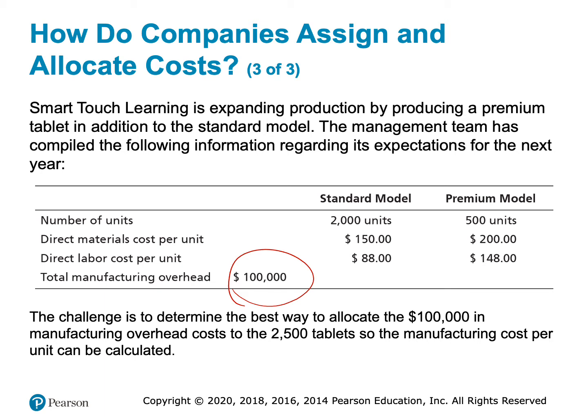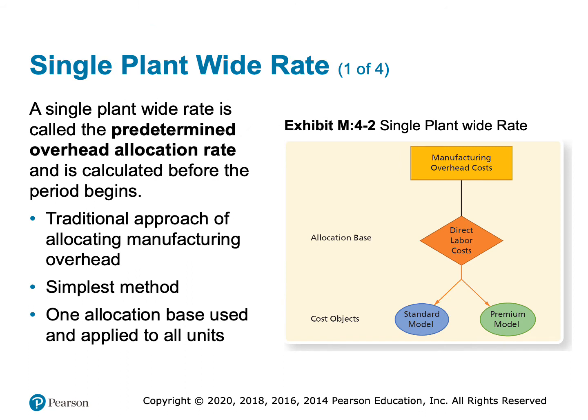What we've done in chapters 2 and 3 is use what's called a single plant-wide rate — also called the traditional approach. You use just one predetermined overhead rate, and all $100,000 gets allocated based on direct labor costs. This method is okay if overhead is relatively immaterial, or if you only make one kind of product. But for a company like Disney with many products, using just one rate doesn't make sense.